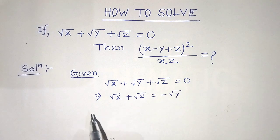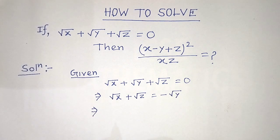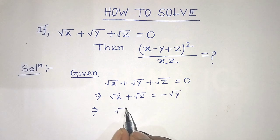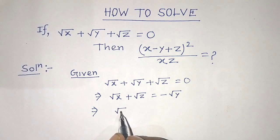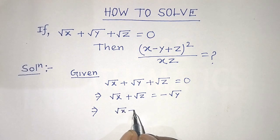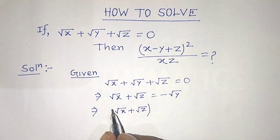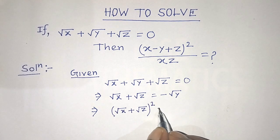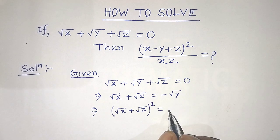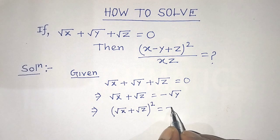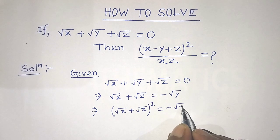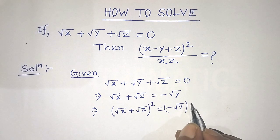After that, we have to take the square on both sides. So we can write on the left hand side: (root of x plus root of z) whole to the power 2 is equal to on the right hand side: (minus root of y) whole to the power 2.